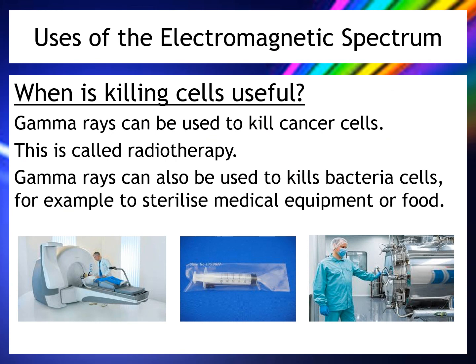So when might killing cells be useful? Gamma rays can be used to kill cancer cells — this is called radiotherapy, as opposed to chemotherapy which uses drugs. They can also kill bacteria cells, which is useful for sterilizing medical equipment or food. Previously, medical equipment was sterilized using heat in an autoclave — a large oven heated to very high temperatures to eliminate bacteria, after which the equipment would be sterile.